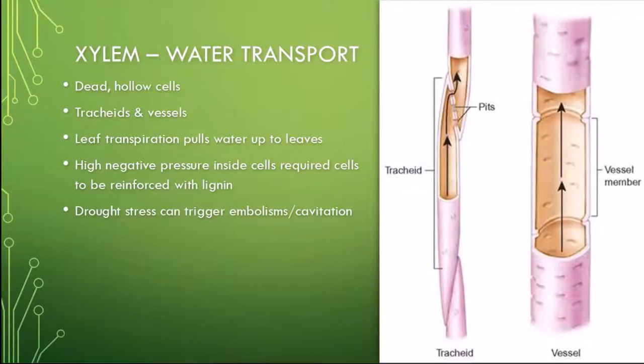Tracheids are smaller in both diameter and length, and they taper at each end where they connect with the next tracheid cell. Pits between tracheid cells enable passage of water between these narrow cells. Vessels are larger in diameter and length, forming a stacked column of hollow cells much like a straw.